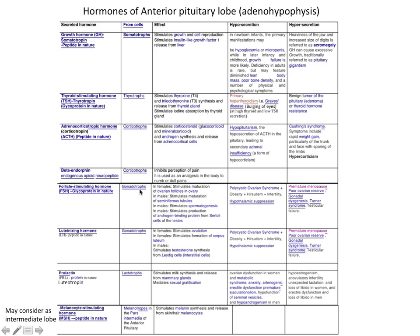Another important hormone is FSH, follicle stimulating hormone, secreted from the gonadotropes. In females, FSH stimulates maturation of the ovarian follicle; in males, it stimulates maturation of the seminiferous tubules, helping the reproductive system. Hyposecretion causes polycystic ovarian syndrome and hypersecretion causes premature menopause. LH, luteinizing hormone, is also secreted from the gonadotropes; in females its main function is stimulating ovulation. Hyposecretion and hypersecretion symptoms are the same as for FSH.